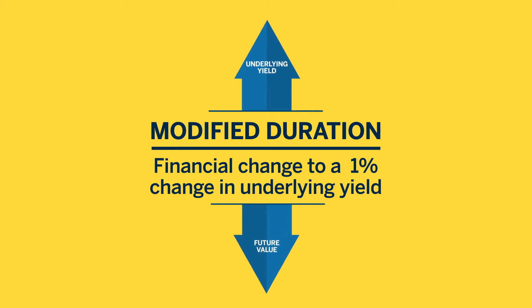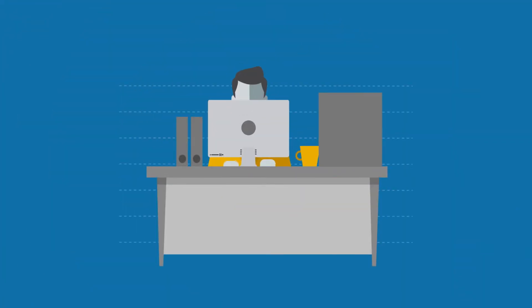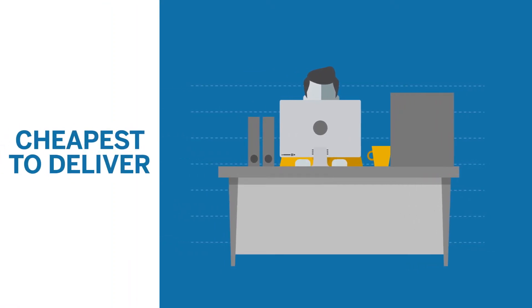US Treasury futures can also be referred to in implied duration and implied basis point value terms. To look more closely at the BPV and modified duration of a futures contract, we must first go back to the concept of a US Treasury futures contract's cheapest to deliver security.